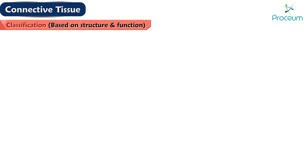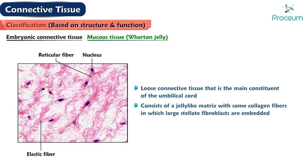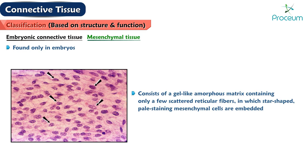Embryonic connective tissue: Mucous tissue, or Wharton's jelly, is a loose connective tissue that is the main constituent of the umbilical cord. It consists of a jelly-like matrix with some collagen fibers in which large stellate fibroblasts are embedded. Mesenchymal tissue is found only in embryos. It consists of a gel-like amorphous matrix containing only a few scattered reticular fibers in which star-shaped, pale-staining mesenchymal cells are embedded. Mitotic figures are often observed in these pluripotential cells.